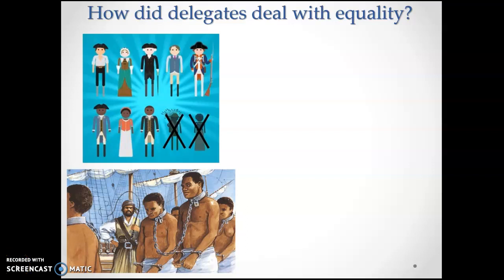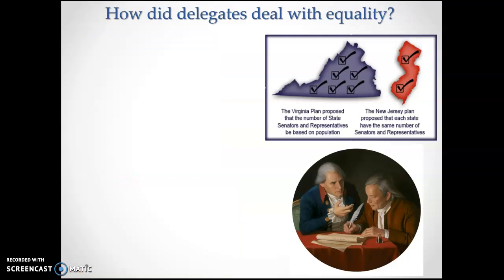Picking up where we left off on Monday's posted lecture, I want to pick up an idea that we talked about pretty extensively in today's Atlantic article, which is how the Constitution and how the delegates at the Philadelphia Convention — the Constitutional Convention — dealt with issues of equality. Or maybe more accurately, how they didn't deal with issues of equality. So let's go back a little bit.